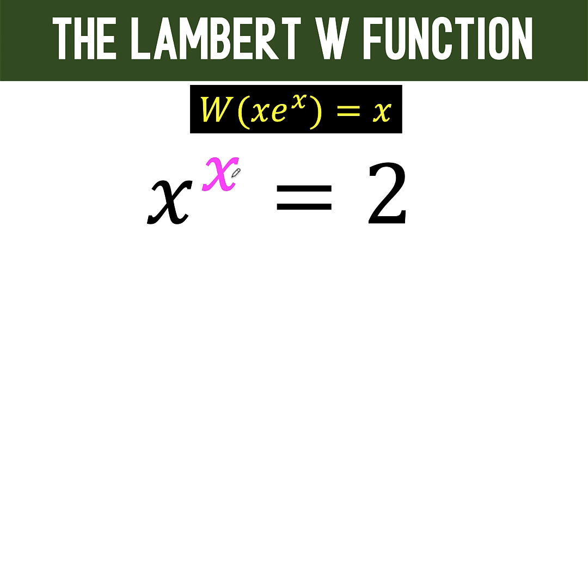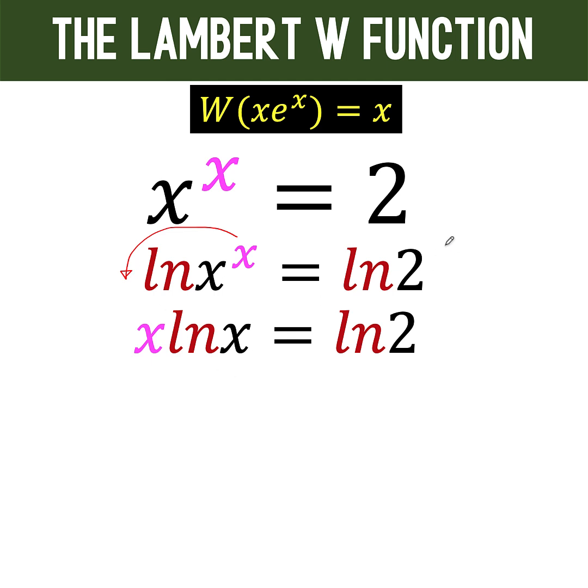So we have ln of the left side equals ln of the right side. Then we apply the property of the logarithm that says when you have an exponent here, that can be appended to the front as one of the factors. So we have x times ln x equals the right side ln of 2.